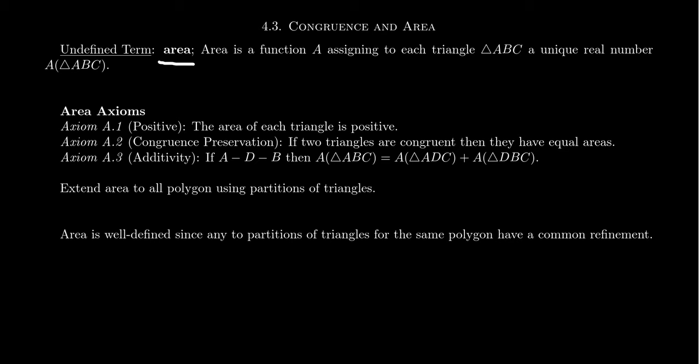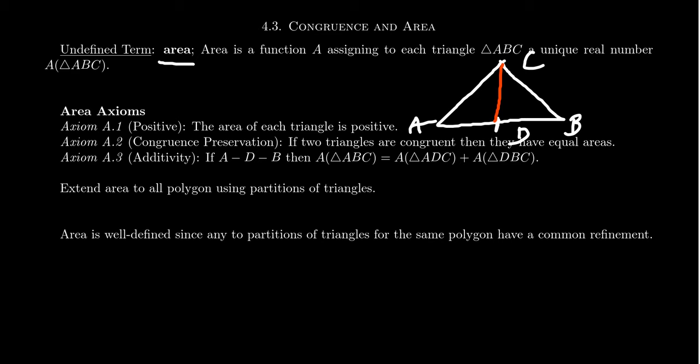Lastly, the third axiom, the additivity axiom, tells us that if we have a point D that sits between A and B, then we can actually dissect the triangle into two pieces. So if we have a triangle whose vertices are A, B, and C, and we pick any point D between two vertices of the triangle — so D sits between A and B — if we consider the two triangles, we cut this in half along that median. The area of triangle ADC plus the area of triangle DBC: if we add these two areas together, we retain the area of the original triangle. That's our additivity.